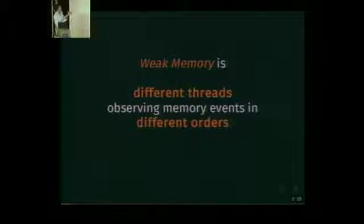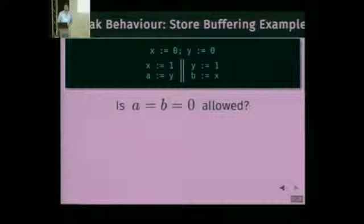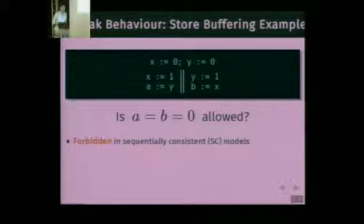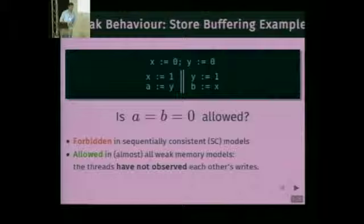Weak memory is when different threads observe memory events in different order. Let's make this more concrete with an example. We're looking here at the so-called store-buffering example. We have two shared variables, X and Y, which are both initially zero, and two threads. The first thread will write to X and read the contents of Y into local variable A. The other thread will write to Y and read the contents of X into local variable B. The question is, is A equal to B equal to zero a valid outcome of this program? If you think about interleavings, you might say that's impossible. In fact, this behavior is forbidden in sequentially consistent models. However, in almost all weak memory models, this behavior is in fact allowed. The reason is that the threads may simply not observe the other threads' write event.